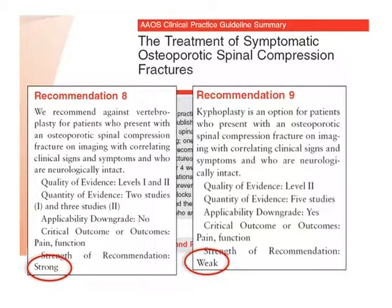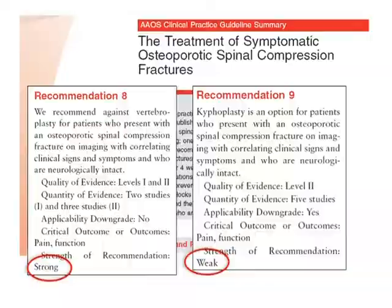A systematic review in the Journal of the American Academy of Orthopedic Surgeons on symptomatic osteoporotic spinal compression fractures recommended against vertebroplasty — a strong recommendation based on those two level one studies. For kyphoplasty, the recommendation is that it remains an option, but that recommendation is weak because only level two studies exist. So the difference is not necessarily that kyphoplasty works much better, but that the quality of evidence for kyphoplasty is lower.